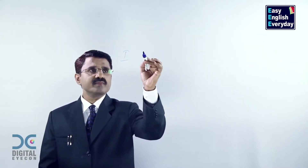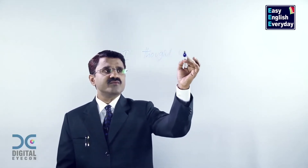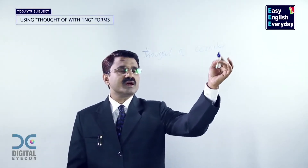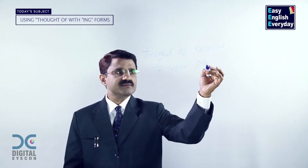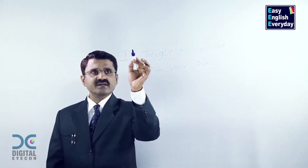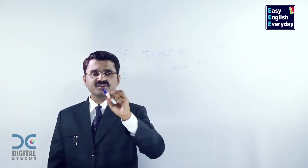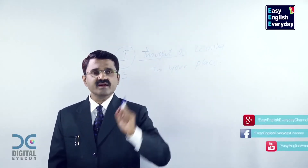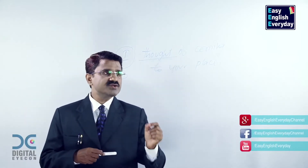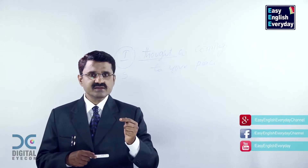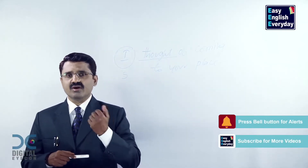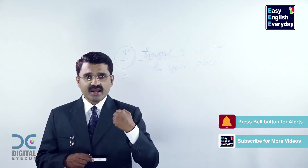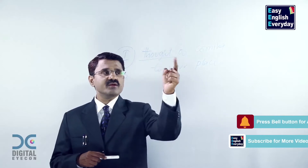What do you find in all these examples? Thought of. After 'thought of', what do you find? The ING form. Look at this example: I thought of coming to your place. In this sentence, 'I' is the subject and 'thought' is the verb, and here it is in past tense. What does it mean? In the past — it may be yesterday, last week, or last month — it was my plan to visit your place. That is the meaning of this sentence.